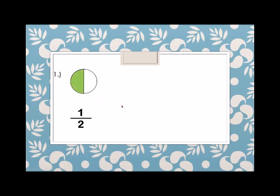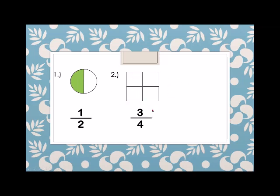Number 2: we have 3 fourths. So we have a square. So we have to shade how many? 3. 1, 2, and 3. So this is 3 fourths — 3 shaded over 4 parts.